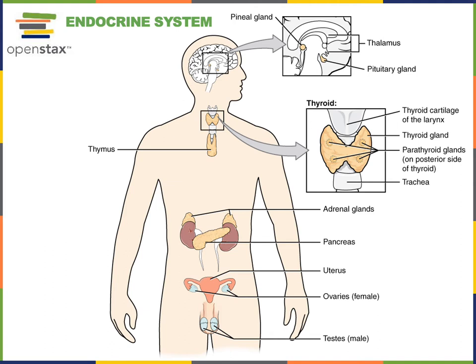We've already discussed the role of the hypothalamus producing the hormones that are secreted from the posterior pituitary gland — antidiuretic hormone and oxytocin. We've also discussed the role of the hypothalamus producing the releasing hormones that regulate the anterior pituitary gland. Now we're going to focus in more detail on the anterior pituitary gland and how it regulates other endocrine organs.